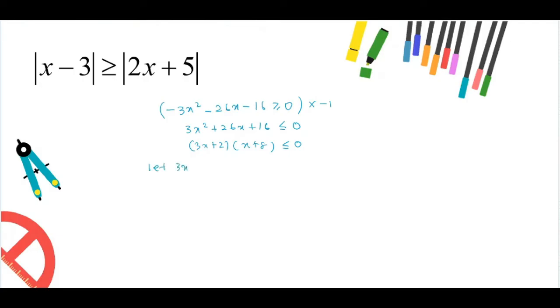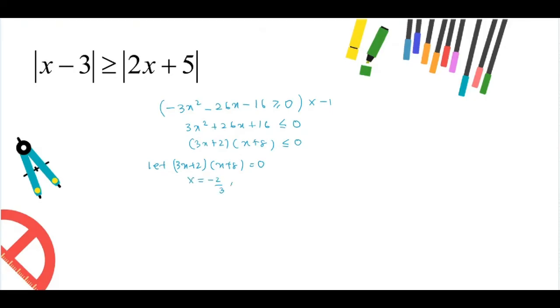Let 3x plus 2 times x plus 8 equals to 0, which gives the roots of x equals to minus 2 over 3 and x equals to minus 8.